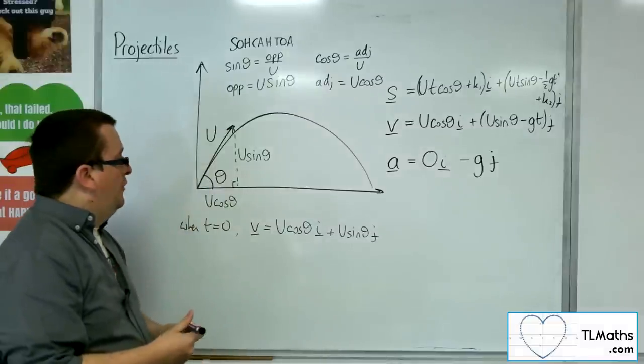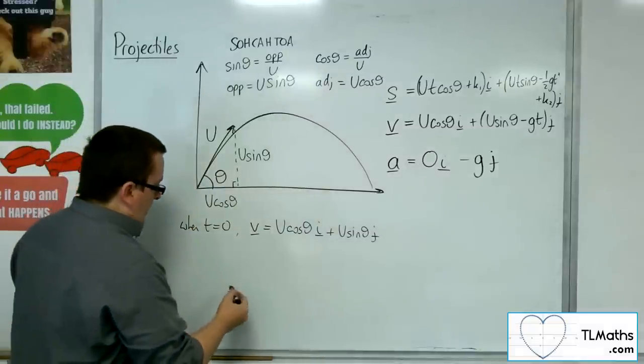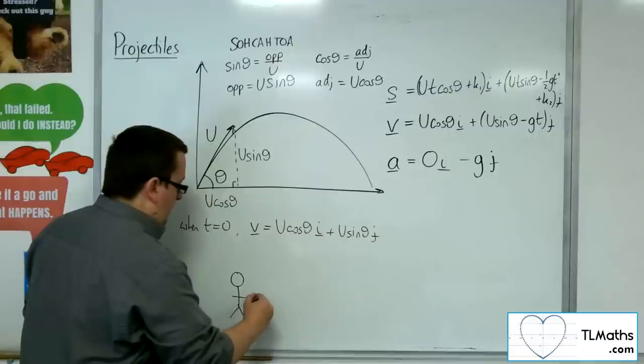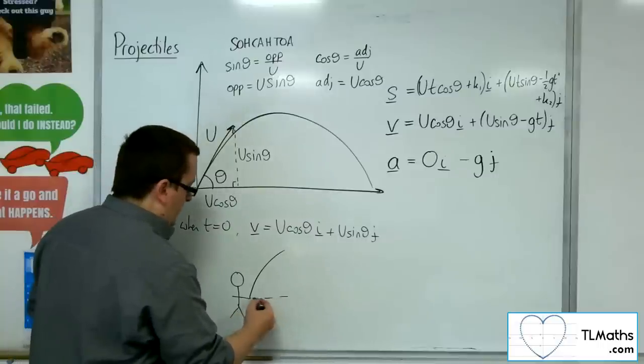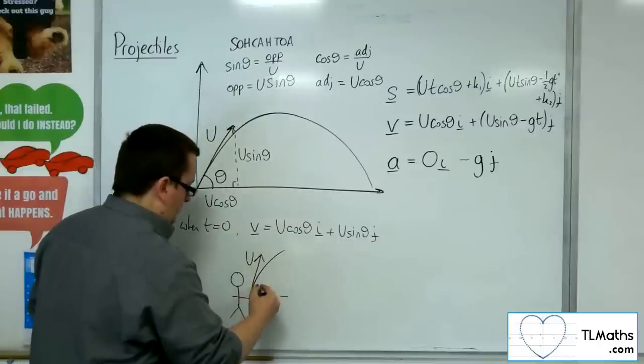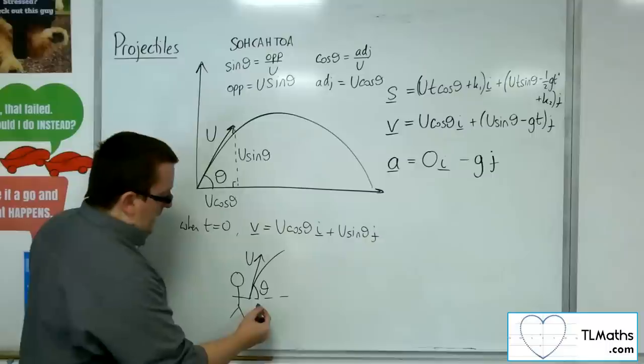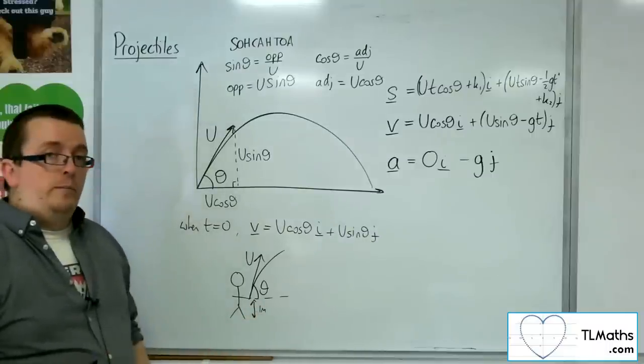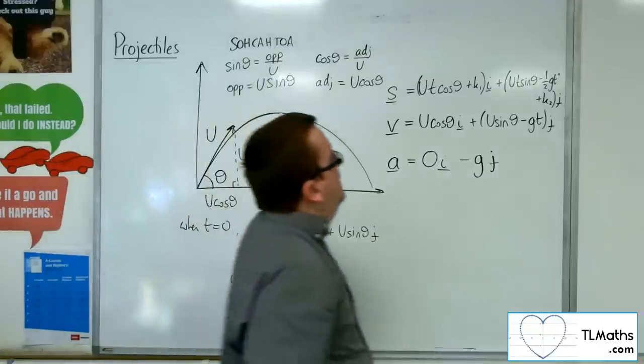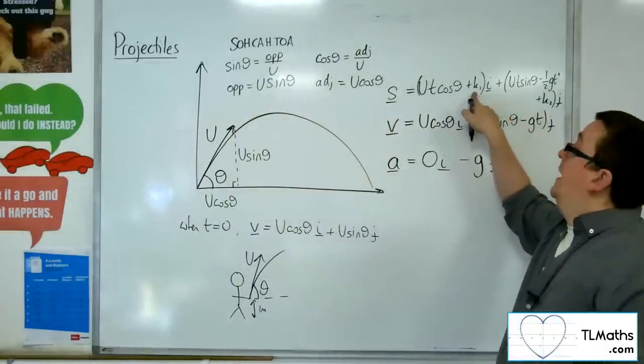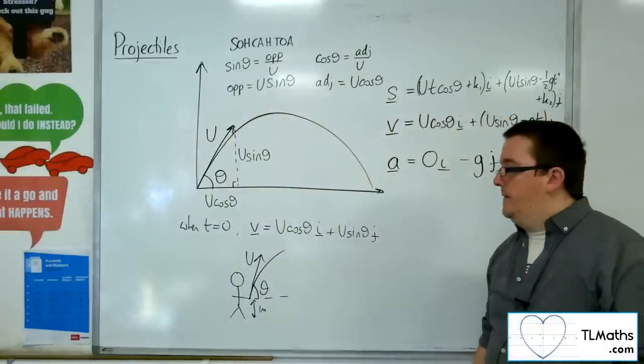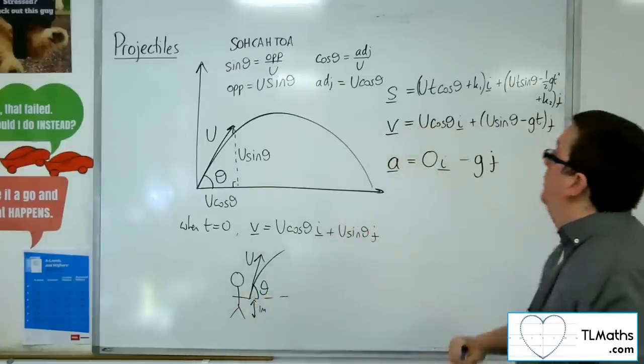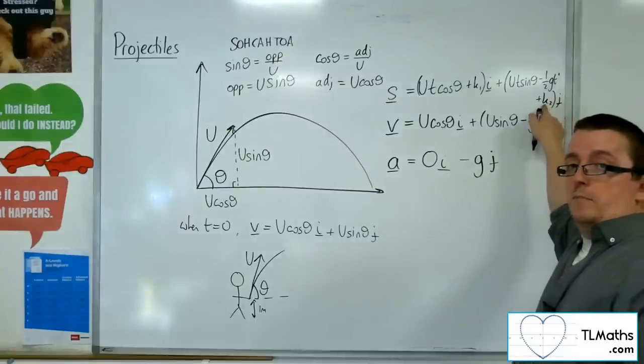So, if I was modelling the particle as being thrown from a certain height, so here I am throwing this ball from a certain height. And I'm told that this is 1 metre off the ground, for example. Then, the i component, well, the k1 would still be 0, if I model it from 0 metres there in the horizontal direction. But k2 would be plus 1 for the j component.